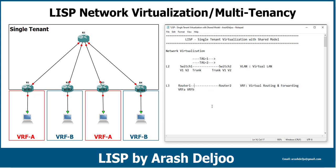Between Router 1 and Router 2, for passing traffic of the two VRFs, we can use two links or two sub-interfaces — in most cases we configure two sub-interfaces. One interface is a member of VRF A and another is a member of VRF B. If we want to use network virtualization here, we configure sub-interface 1 with tag 1 and sub-interface 2 with tag 2. When we want to send the traffic of VRF A, we send it with tag 1, and for VRF B, we use tag 2.